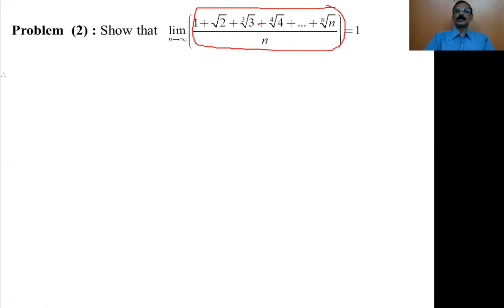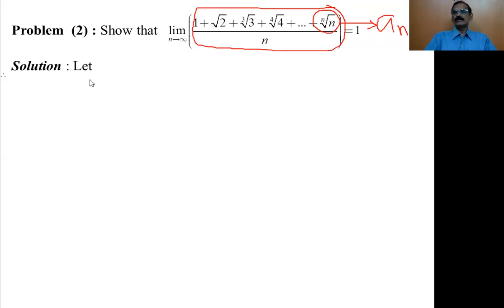The arithmetic mean of n terms is (a_1 + a_2 + a_3 + a_4 + ... + a_n) / n, where a_n is the nth term. Therefore, here we have to use Cauchy's first theorem on limits. We have to choose a_n. The nth term of the given expression is the nth root of n, so a_n equals the nth root of n.